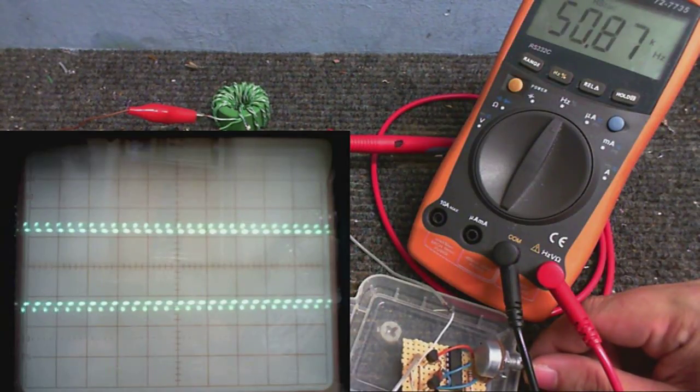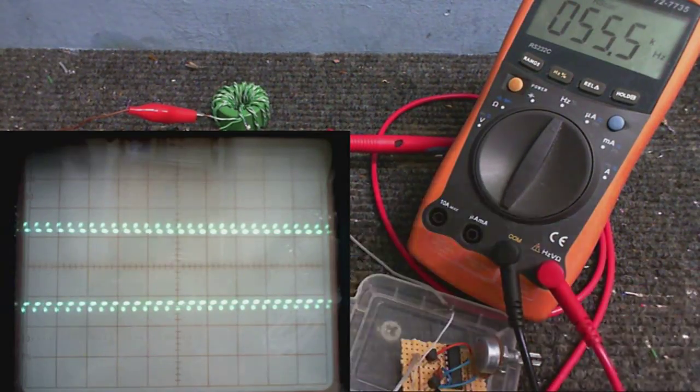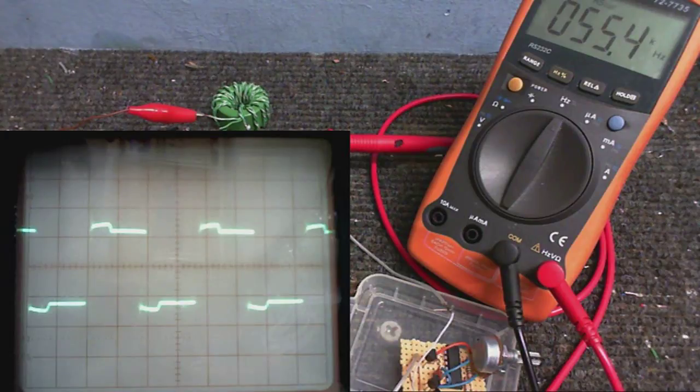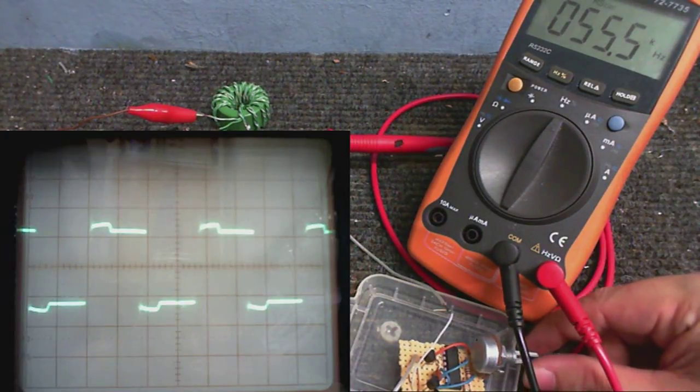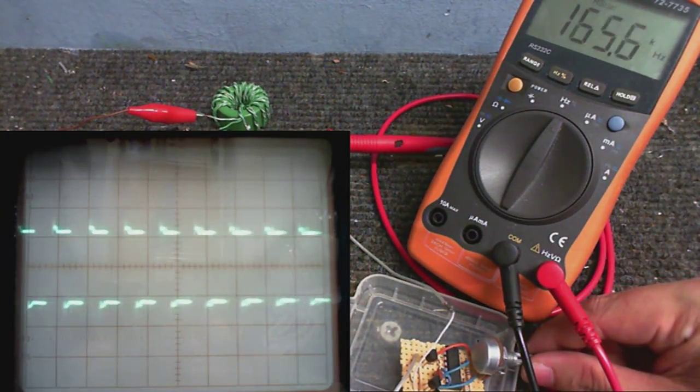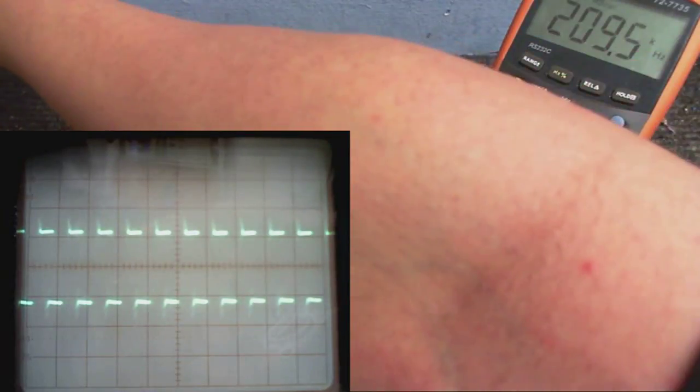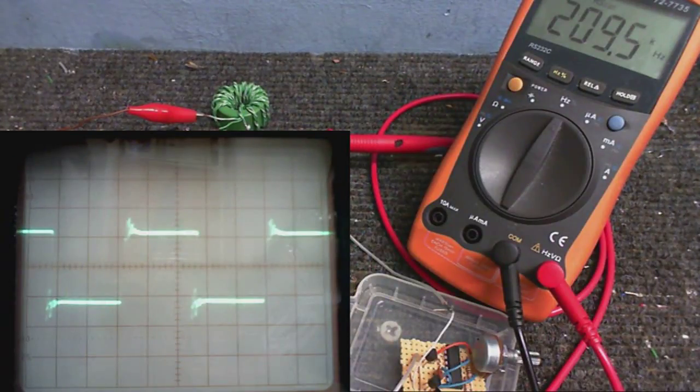So yeah, I'd say anything from about 50 kilohertz onwards seems to work really well. And of course, no Tesla coil ever runs down at that frequency, so I'm going to say all in all, that's a successful transformer.